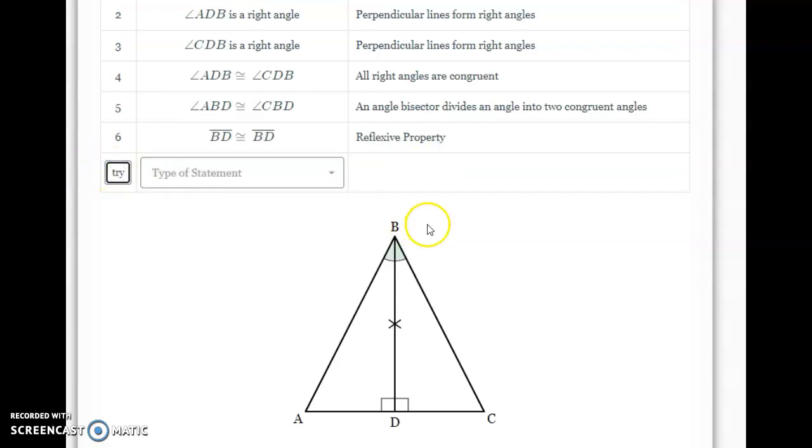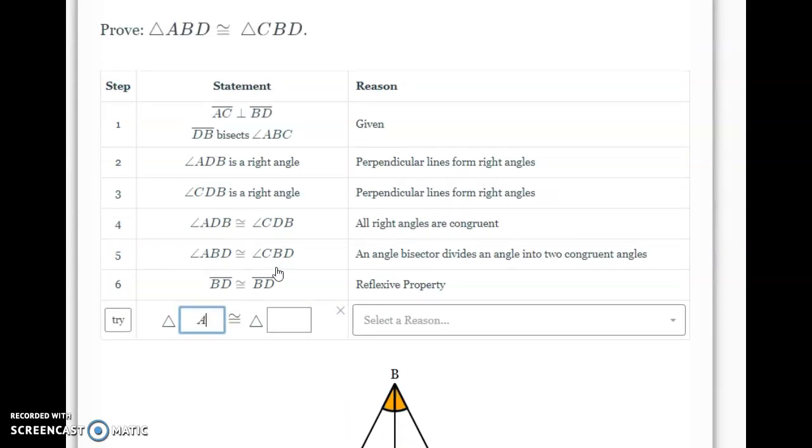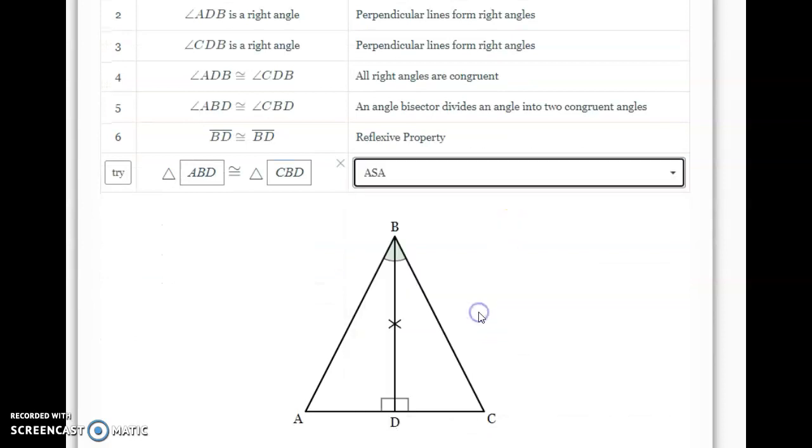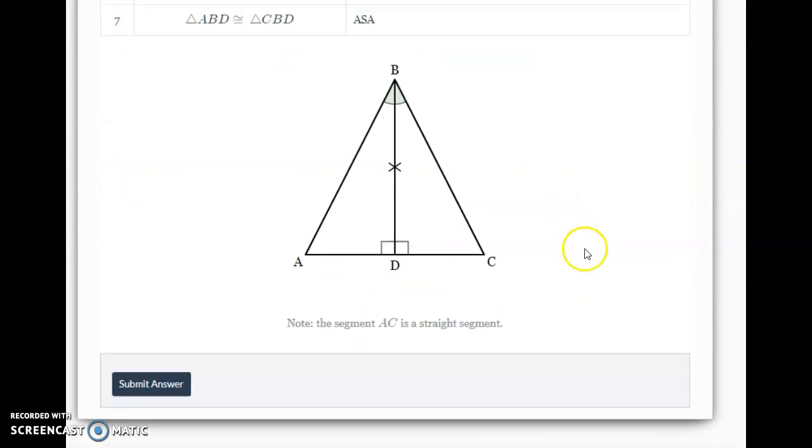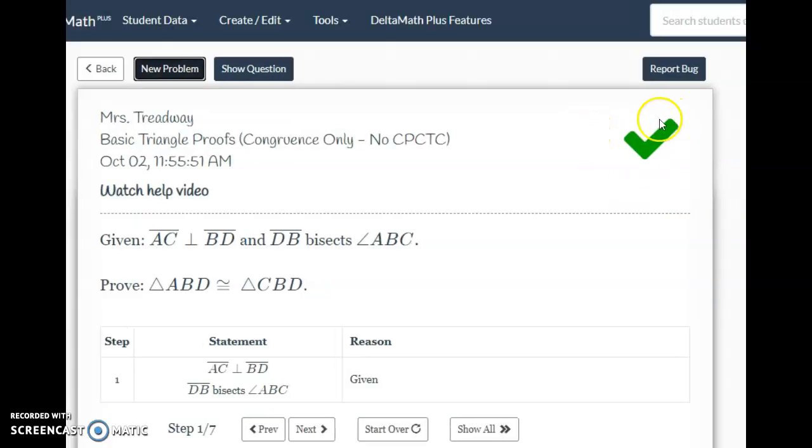I now have enough information to say that my two triangles are congruent by angle side angle. So, I'm going to say that triangle ABD is congruent to triangle CBD by angle side angle, ASA. Once I'm done, I will again hit submit and I get that green check mark meaning that I have done this correctly.